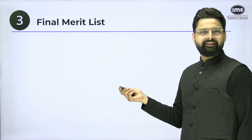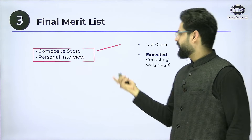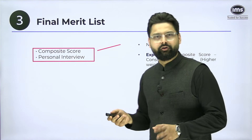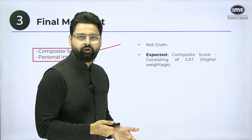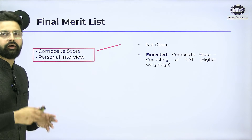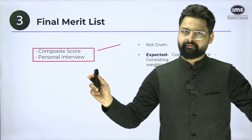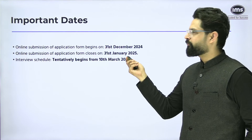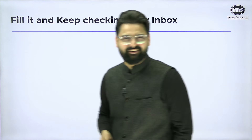The final merit list will be created on the basis of a composite score and personal interview. The composite score breakdown has not been fully specified, but since it will definitely include a CAT component, a better CAT score increases your chances of converting this. Personal interview will also be significant. Check the important dates, and if you are eligible, fill the application and keep checking your email.